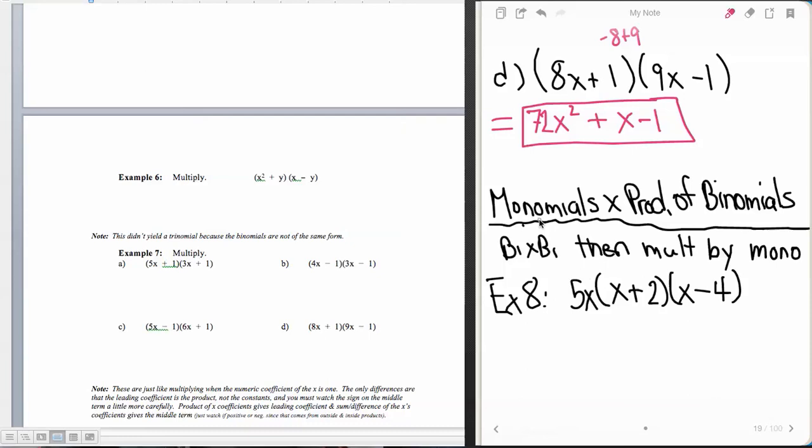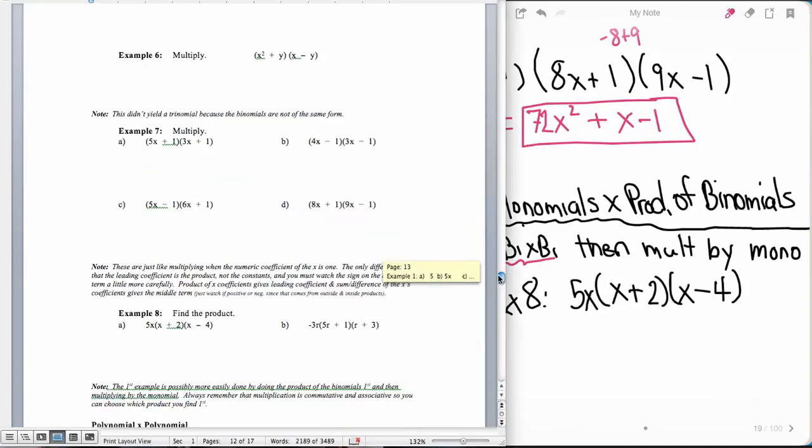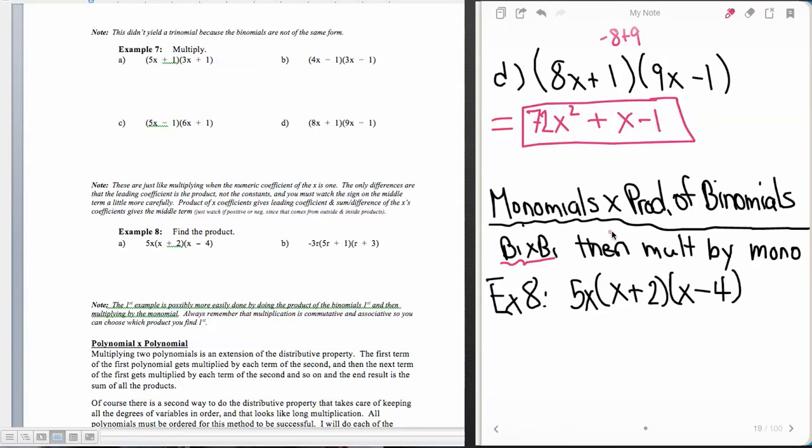Now the next thing that we need to do is a monomial times a product of binomials. And I highly recommend that we do the binomial times the binomial first and then multiply by the monomial. So taking a look at our next problem here, we have 5x times (x+2) times (x-4). So I'm going to copy down my 5x and then I'm going to do my binomial multiplication. So I know I'm going to get an x squared and the difference of 4 and 2 and it's going to be negative, and then the product of 4 and 2 and it's also going to be negative.